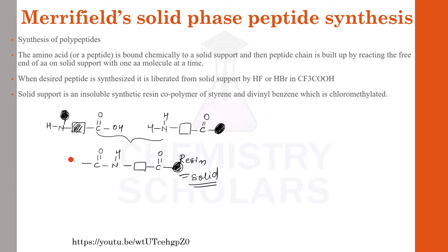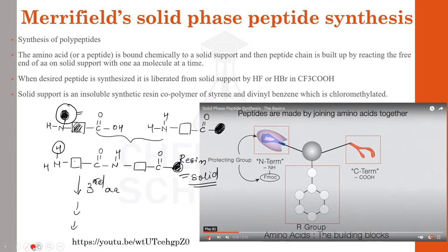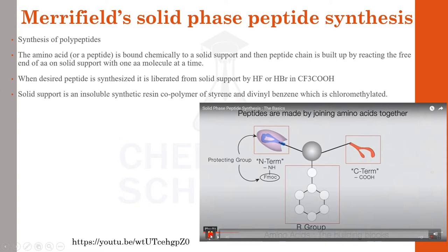Once the first peptide linkage is formed, the group which was protecting one end is de-protected. After de-blocking, we get the free H. We then react this with the third molecule of amino acid, and so on the synthesis continues. There is a very good animation by Deepan Ghosh — I am putting the link in the description box.